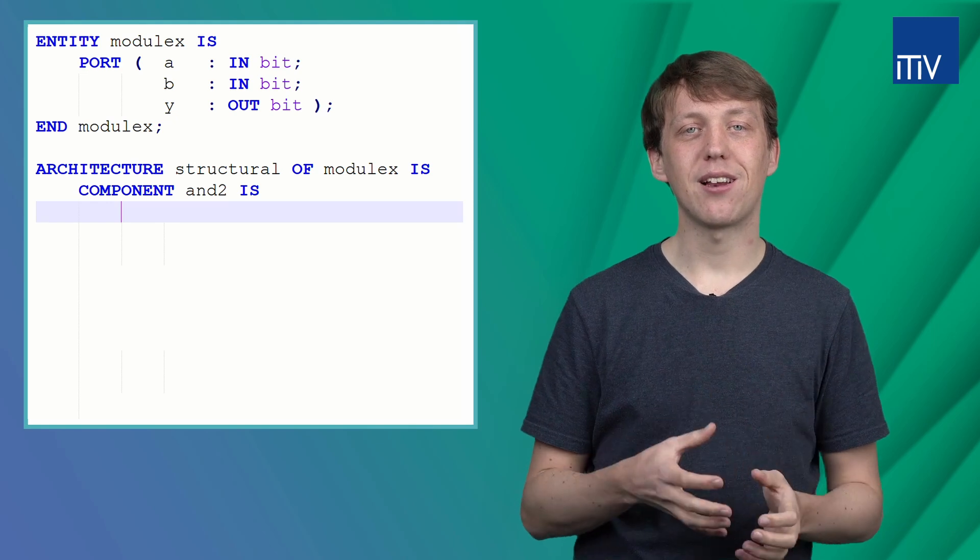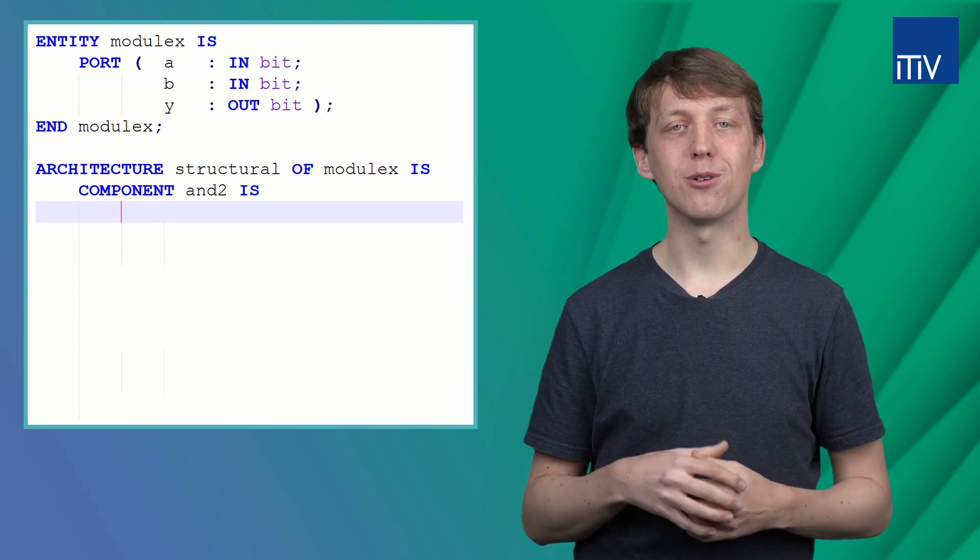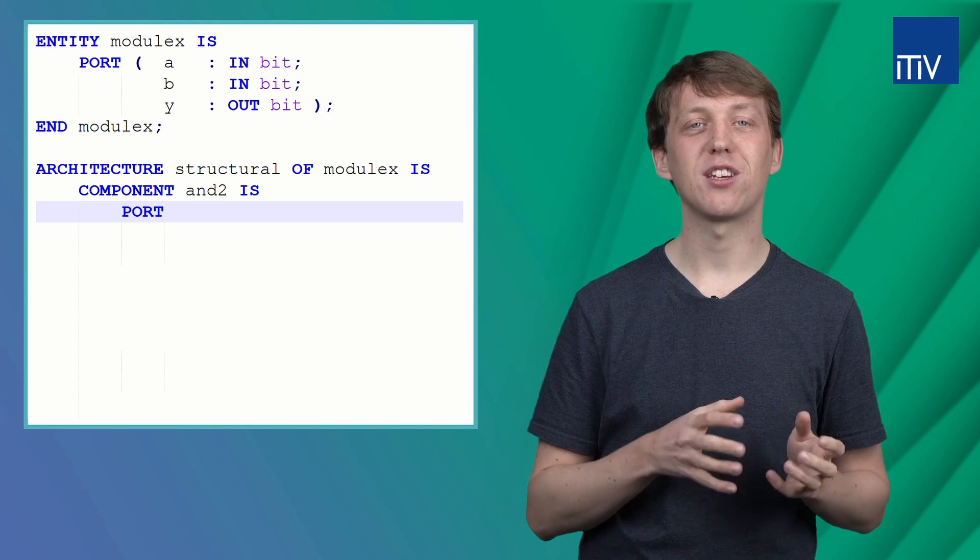Afterward, we need to declare the ports of our component. This is done by using the port keyword. Within the parenthesis, we list all the inputs and outputs of our design using the same keywords as we used when we defined the entity.